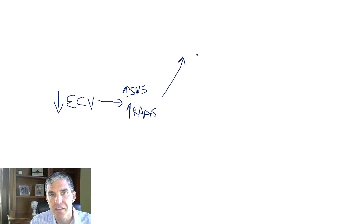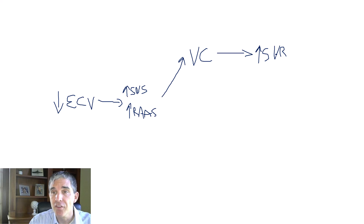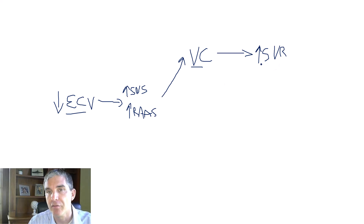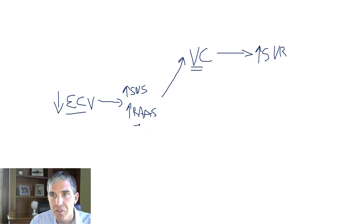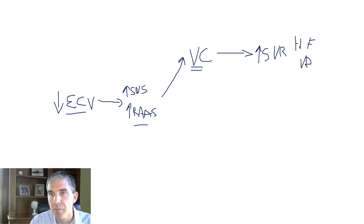These two systems generate a couple of responses seen in all low ECV disease states. The first is vasoconstriction of peripheral arterioles, with the goal of increasing the SVR. In cirrhosis, the SVR is low, and even though vasoconstriction occurs in response to low ECV, the SVR will not increase to normal or above normal — the body is unable to compensate. Nevertheless, this vasoconstriction does occur in an attempt to raise the SVR. In heart failure and volume depletion, you will see a high SVR — above the normal level — because of the response of these two systems.